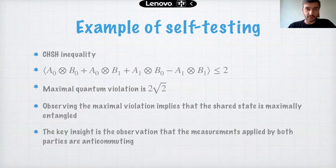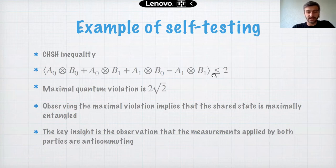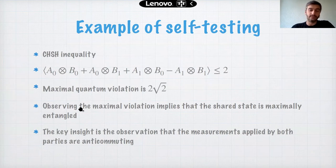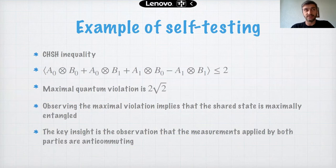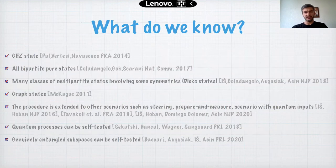The emblematic example of self-testing is the CHSH inequality, understood since the late 1980s. Its local bound is 2, and every violation certifies entanglement, but the maximal quantum violation is 2√2. It was proven that observing this maximal violation implies the shared state is maximally entangled. The key insight is that the measurements applied by both parties must be anti-commuting at the maximum, and every anti-commuting pair of observables identifies a qubit-qubit subspace.